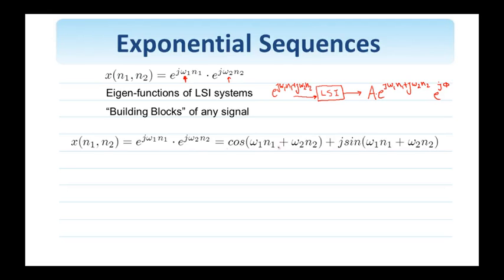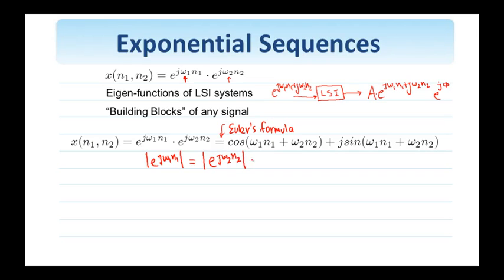Another form to describe these complex exponentials is with this formula attributed to Euler. E to the j omega 1 n1 times e to the j omega 2 n2 is the polar representation of this complex signal, and this is equal to cosine of the argument plus j sine of the argument — that's the Cartesian representation of the complex function, with the real part and the imaginary part. Looking at either the polar or the Cartesian representation, the magnitude of this complex exponential is equal to 1.